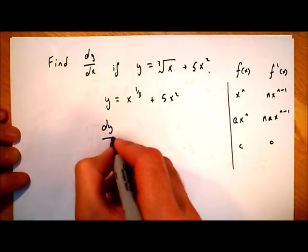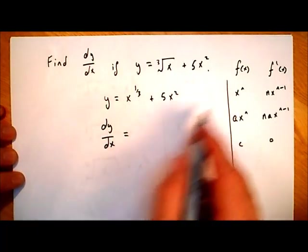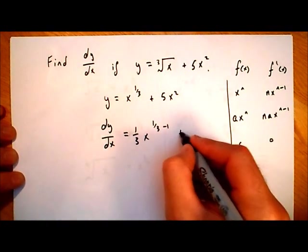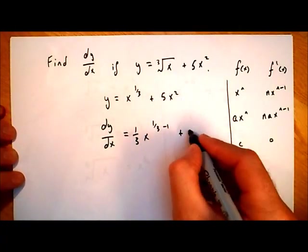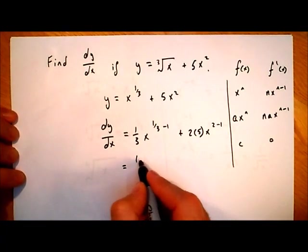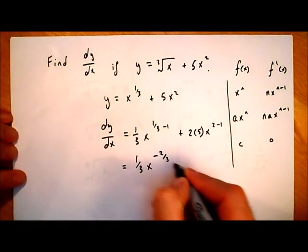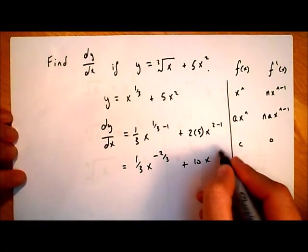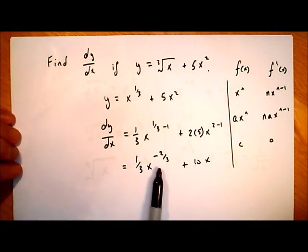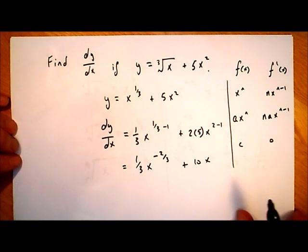Now we can differentiate and find dy over dx. Just following the x to the power of n rule, where n is one third, we get one third times x to the power of one third minus one, plus differentiating 5x squared gives two times five, so 10x to the power of two minus one. Tidying that up: one third x to the power of one third minus one is minus two thirds, so we get one third x to the power of minus two thirds, plus 10x.